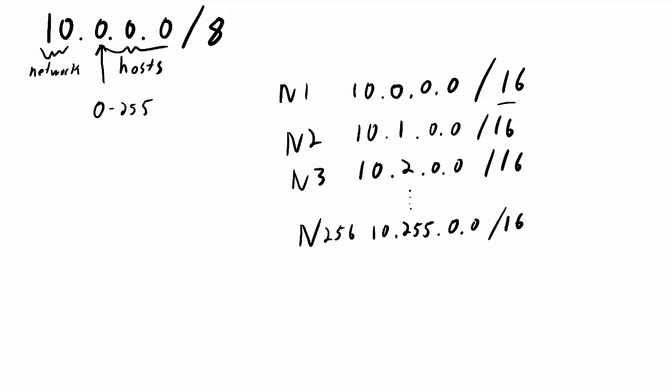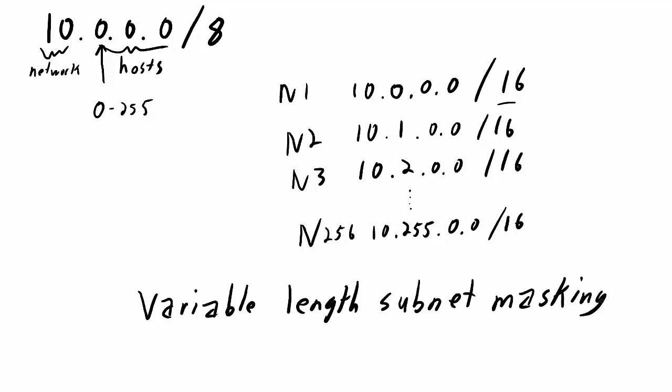Subnetting when you are splitting a network into smaller equal-sized networks where the number of networks is a power of 2 is a very simple process, as I've shown here. If you need to split networks into different sizes, that's more challenging and outside the scope of this video — but you can look up variable length subnet masking, or VLSM, which allows you to split a network into multiple smaller networks that are not all the same size. I hope that helps your understanding of subnetting IPv4 networks. Thanks for watching — I'll see you in the next video.